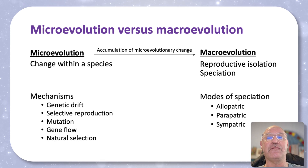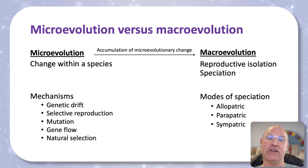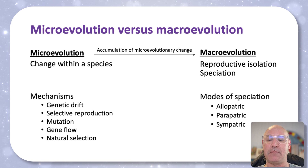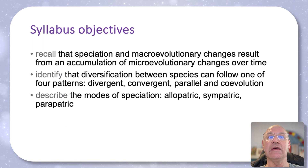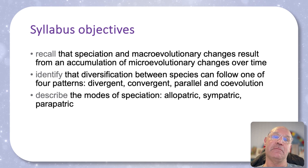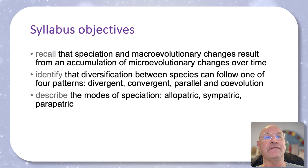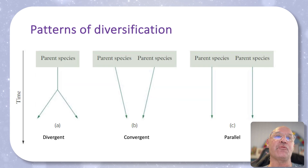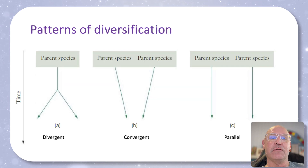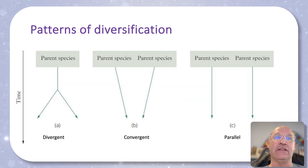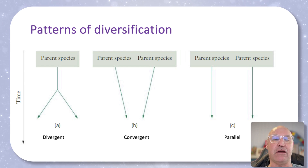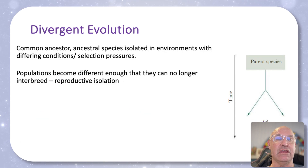We talk about three different modes of speciation: allopatric, parapatric, and sympatric, and we'll talk about those. We've got some syllabus objectives talking about the modes of speciation and different patterns of evolution. So we've got three different patterns: divergent, convergent, and parallel. Let's have a quick look at these.